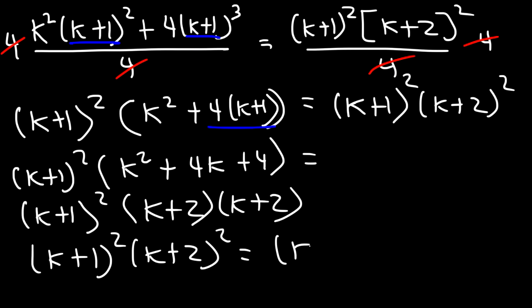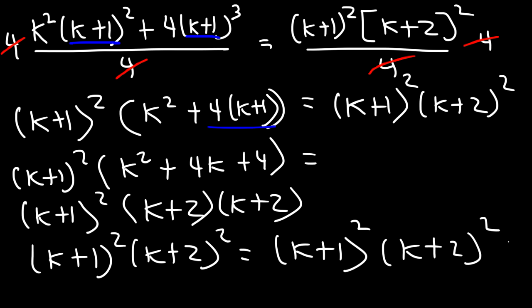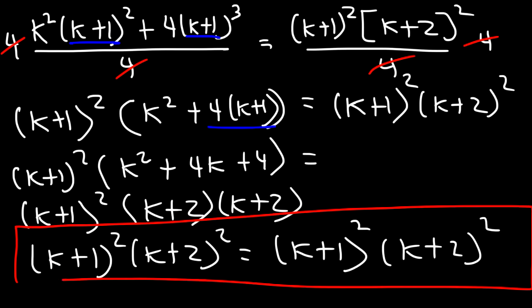And that's equal to the right side. So we've shown that the left side and the right side are equal for the next term, k plus 1. Therefore, it's going to be equal for all terms. And that's how you can use mathematical induction to prove that a certain expression is true for any term.